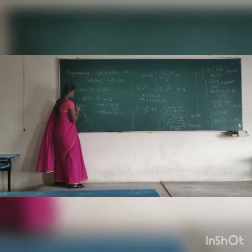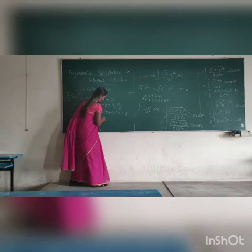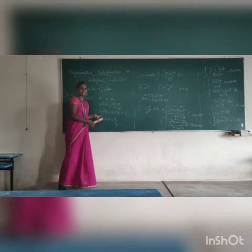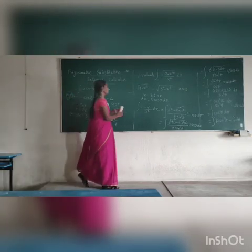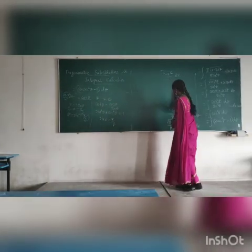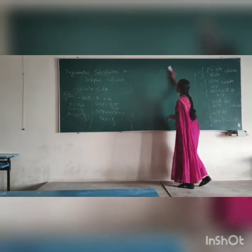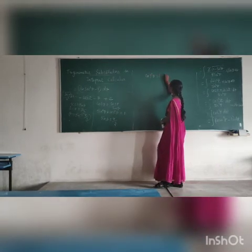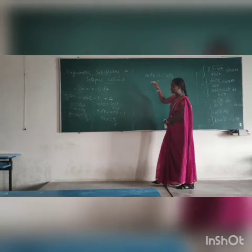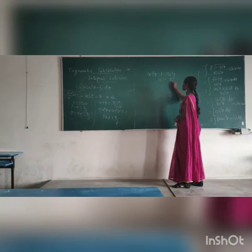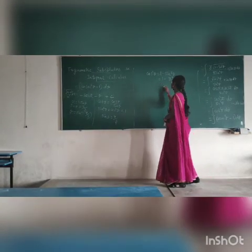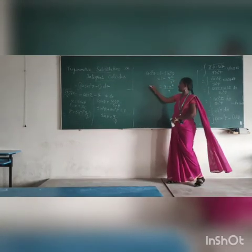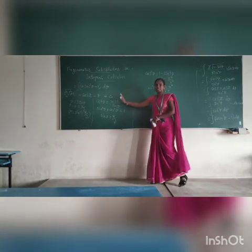We already have the sin theta value from x equal to 3 sin theta, so sin theta equals x divided by 3. So cos squared theta equals 1 minus sin squared theta, which is 1 minus x divided by 3 squared. Taking the square, it is 1 minus x squared divided by 9. Taking LCM, we get 9 minus x squared divided by 9. So this is the value of cos squared theta, and taking square root, cos theta equals root of 9 minus x squared divided by 3.